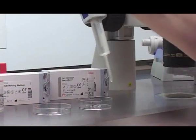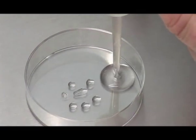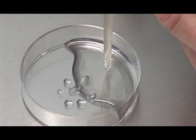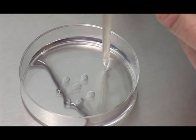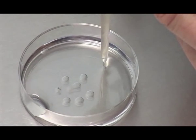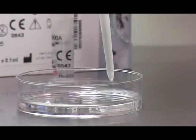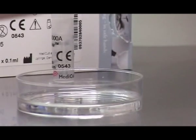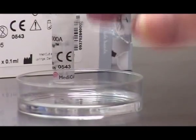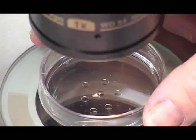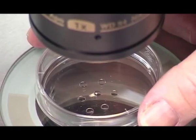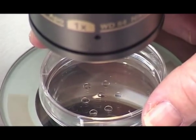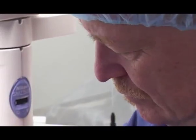Immediately cover the drops with pre-equilibrated liquid paraffin oil. Place a lid on the dish and briefly control the interface between the sperm suspension and SpermSlow. Incubate the dish for up to 15 minutes.